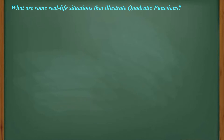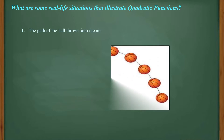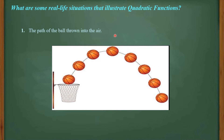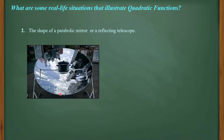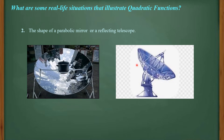So what are some real-life situations that illustrate quadratic functions? For example, the path of a ball thrown into the air follows a quadratic function. Number 2 is the shape of a parabolic mirror or a reflecting telescope — it forms a U-shape. When you drop something into it, it produces that U-shape, which is also a quadratic function, as well as the satellite dish.